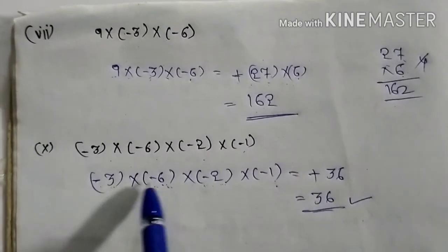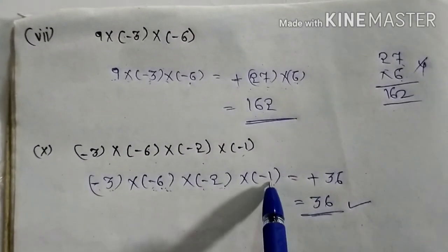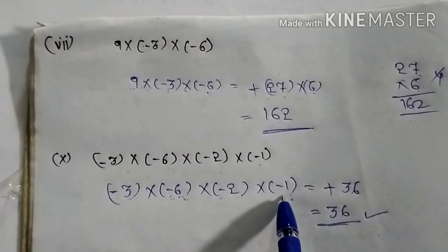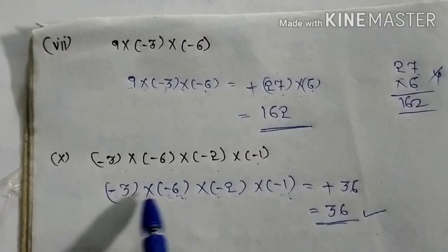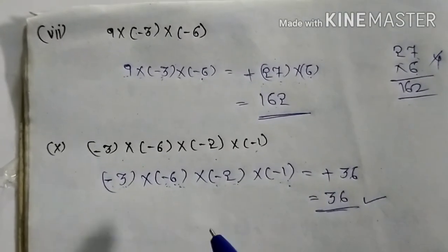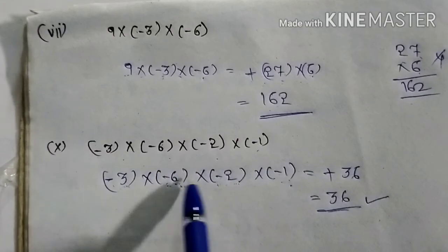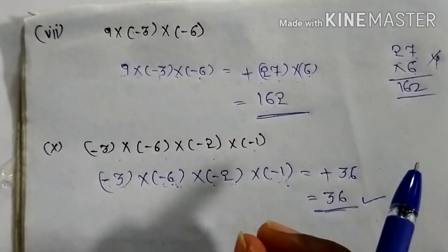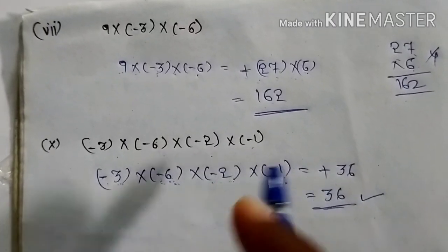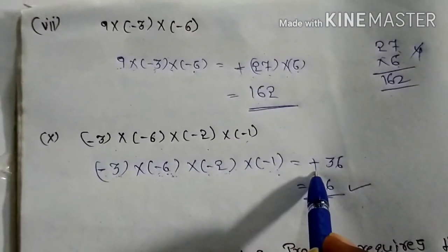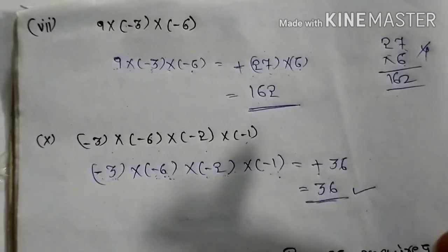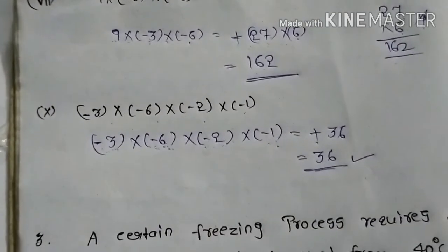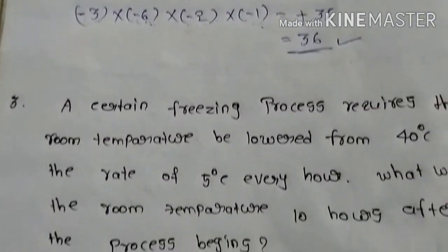If you want, you can write one more step: minus into minus is plus, plus into minus is minus, minus into minus is plus. You have to remember: whenever they have given an even number of negative integers — see how many there are: 1, 2, 3, 4 — if given an even number of negative integers, you can take the plus symbol directly. Your answer is 36.